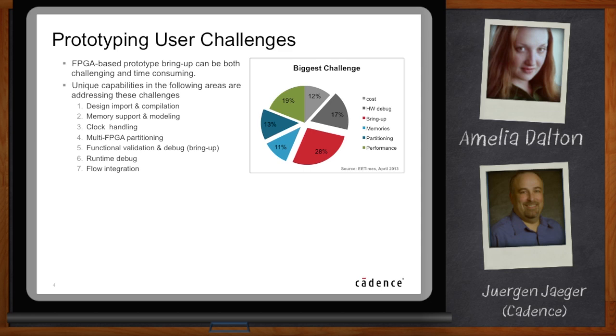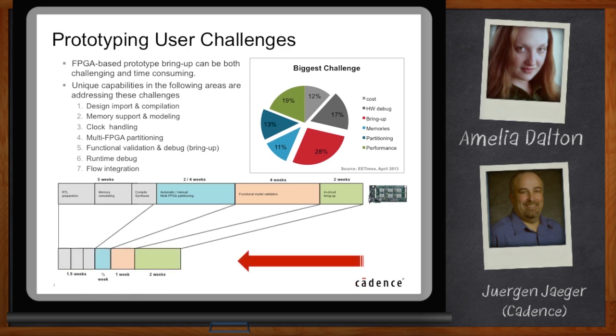So Juergen, what steps does a typical prototyping bring-up involve and how long does it take, do you think? Well, compiling RTL code written for an ASIC design and implementing it in FPGAs requires some preparations. And depending on the flow and tools used, quite some rewrite, which can easily take several weeks to do. Things that require attention here are gated clocks, which need to be converted, latch-based design, tri-states, and so on.